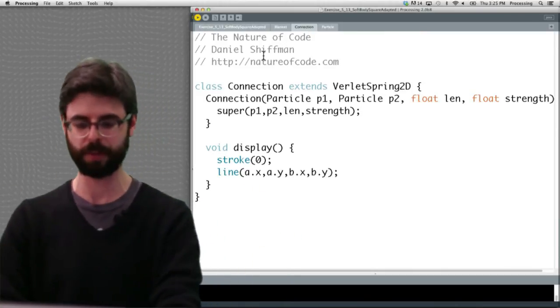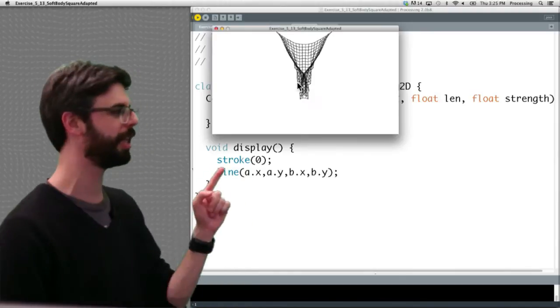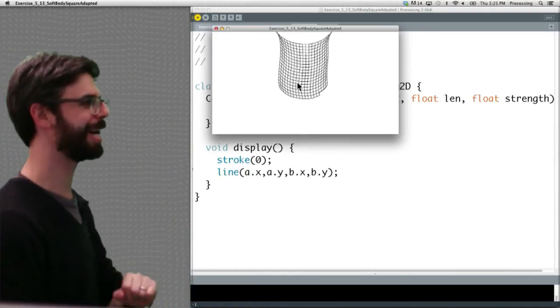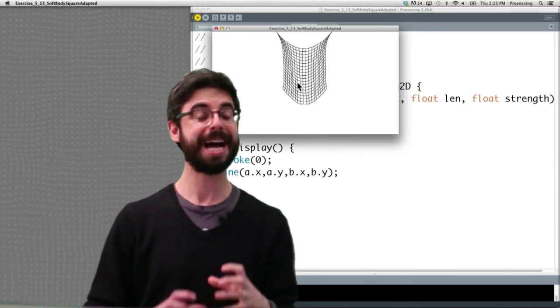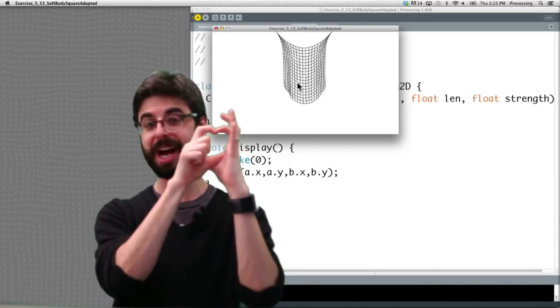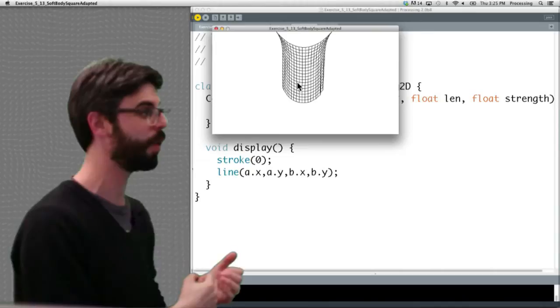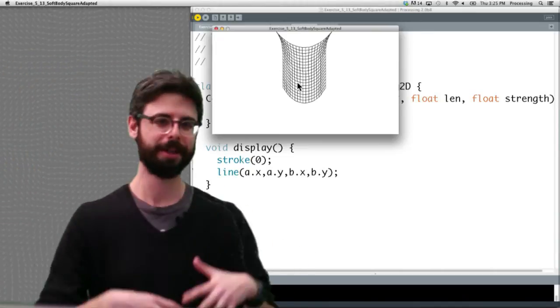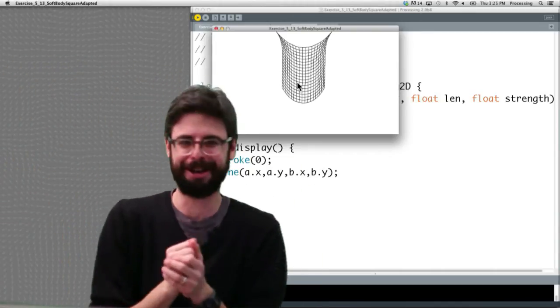A great exercise for you: try to render this not as connected lines, but see if you can make each connection a quad, a polygon, so you could put an image texture on it. What if you could make a blanket with a sunflower on it?